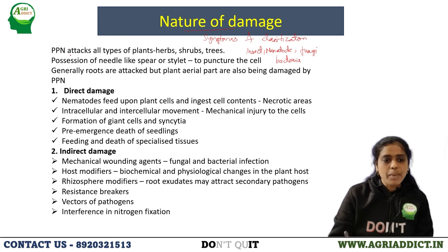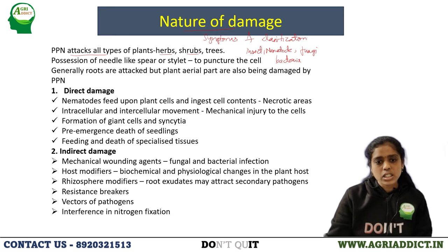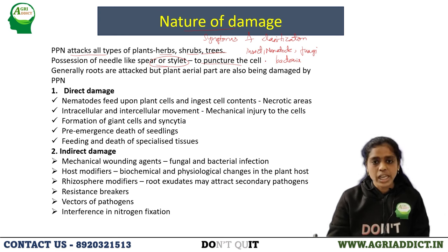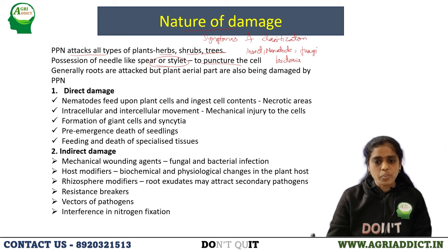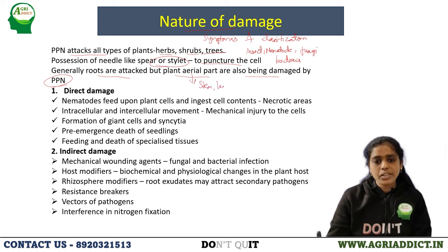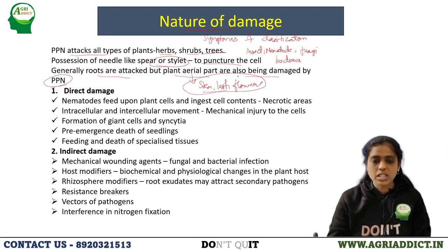Plant parasitic nematodes mainly attack all types of plants like herbs, shrubs, and trees. They possess mainly a needle-like spear or stylet which is used to puncture the cell, and this stylet helps cause infection and aids in the entry of the nematodes into the host plant. Generally roots are attacked, but plant aerial parts — stem, leaf, flowers — are also being damaged by plant parasitic nematodes.